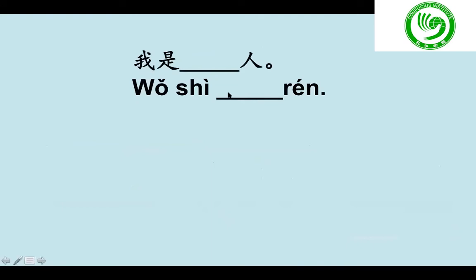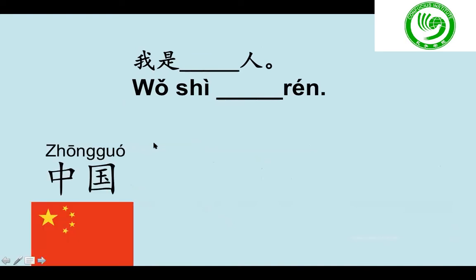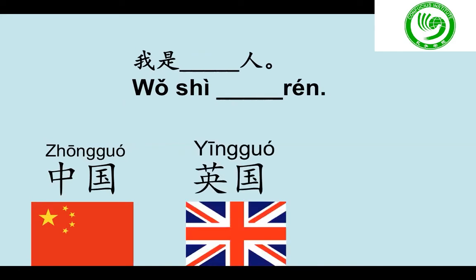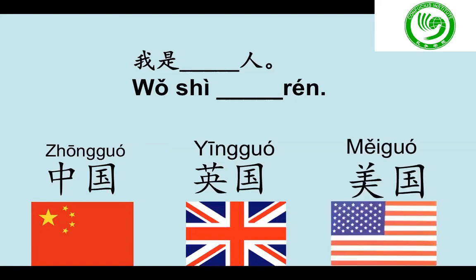Then how to say 'I am Chinese' or 'I am British' or 'I am American'? How to say 'I am'? It is 我是. 施老师 is Chinese, so I can say 我是中国人. How to say 'I am British'? 我是英国人. How to say 'I am American'? 我是美国人. 很好. Now you do these three sentences please.